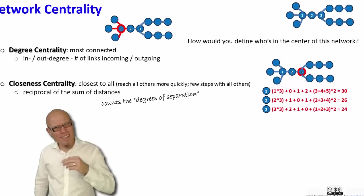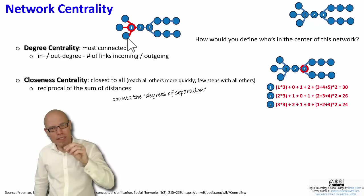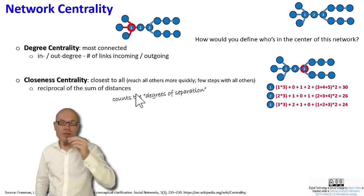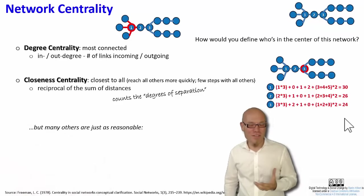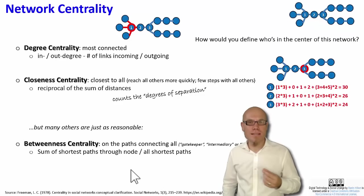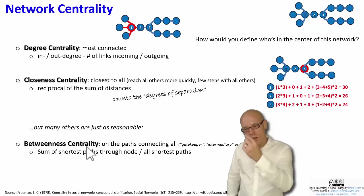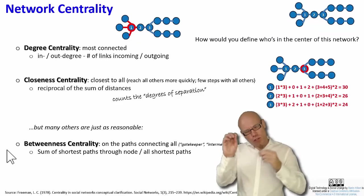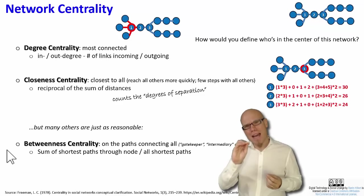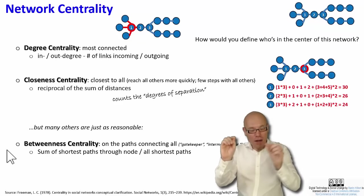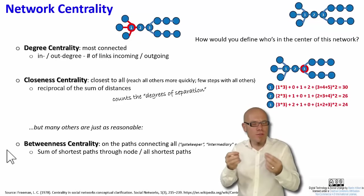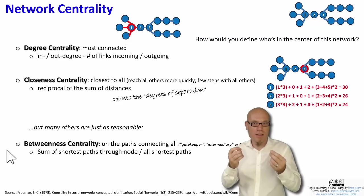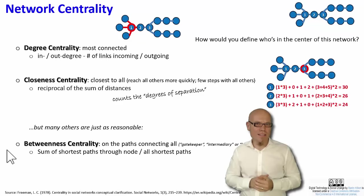These are known as degree centrality, just count the numbers of degrees of links, and closeness centrality. It has to do with how close you are to the other ones. But there are many others that are just as reasonable and just as justifiable. For example, one very common one is called betweenness centrality. That counts if you go from every node to every other node on the shortest path, how often do you have to pass by a specific node? This node is most often between all other nodes. That's why it's called betweenness centrality. That's very important to calculate, for example, if you want to know who is a potential bottleneck, or who is an indispensable intermediary.